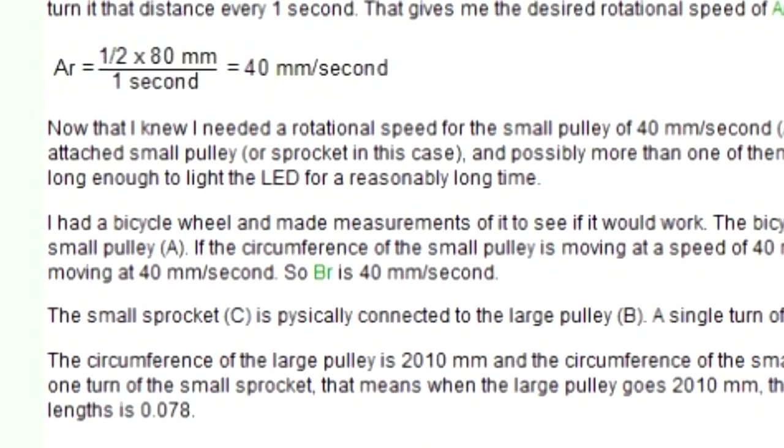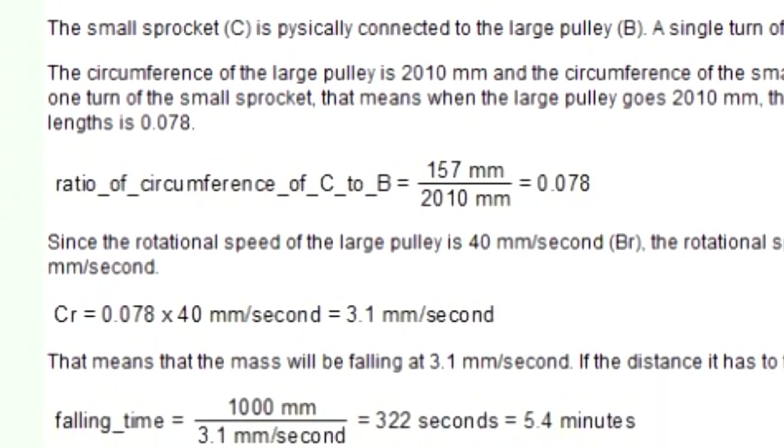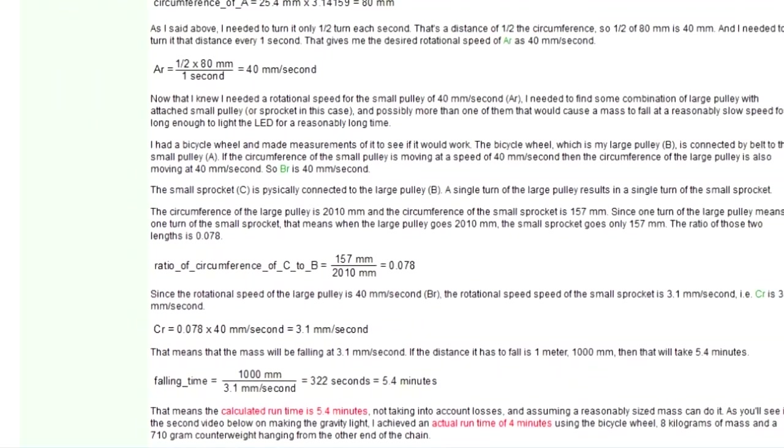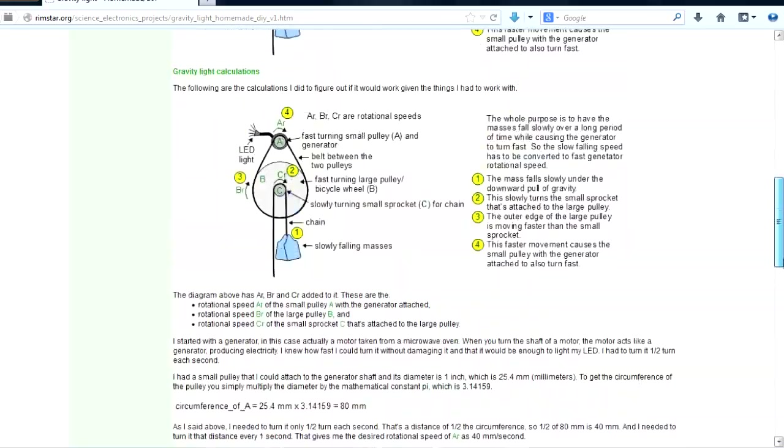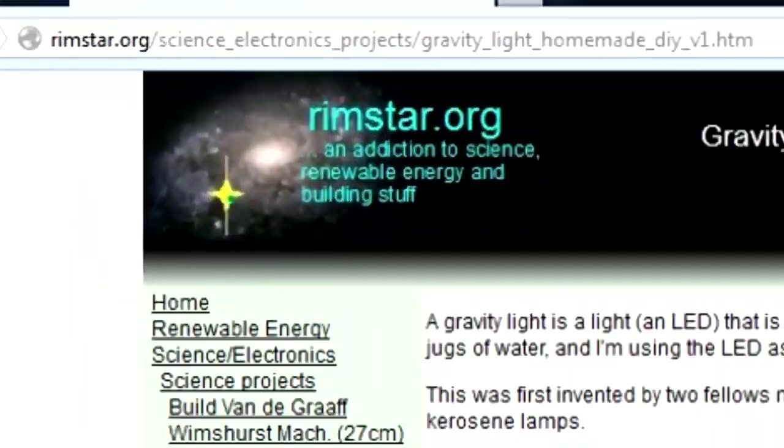I then did these calculations to see if I could convert the slowly falling masses to a fast enough speed for this generator by making use of a bicycle wheel. You can find these calculations on my webpage here, or use the link in the description below this video. So it looked like it might be doable.